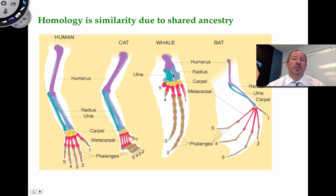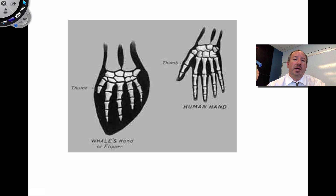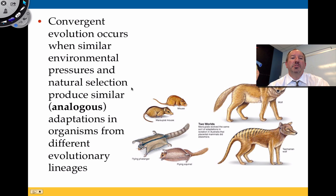The humerus, radius, and ulna are reduced in the whale, and there are extended phalanges in the fin. This is a great example of how someone in systematics would use homologous structures to put together a phylogeny. When you look closely — this is from the book Moby Dick — when you look at the whale's fin, it looks very similar to the human hand. Now, as opposed to analogous structures, those are the result of convergent evolution — to converge, meaning to come together.